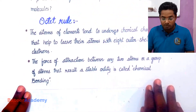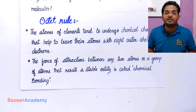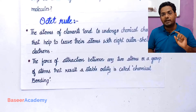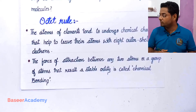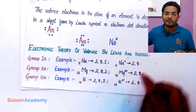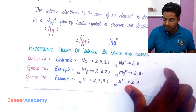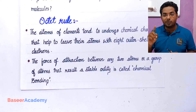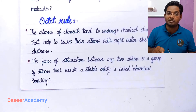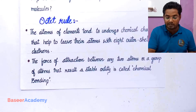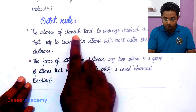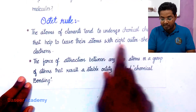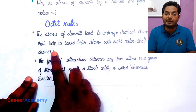Let us now talk about the octet rule. Atoms tend to lose or gain electrons so that they are left with eight valence electrons — this is known as the octet rule. The atoms of elements tend to undergo chemical changes that leave their atoms with eight outer shell electrons.